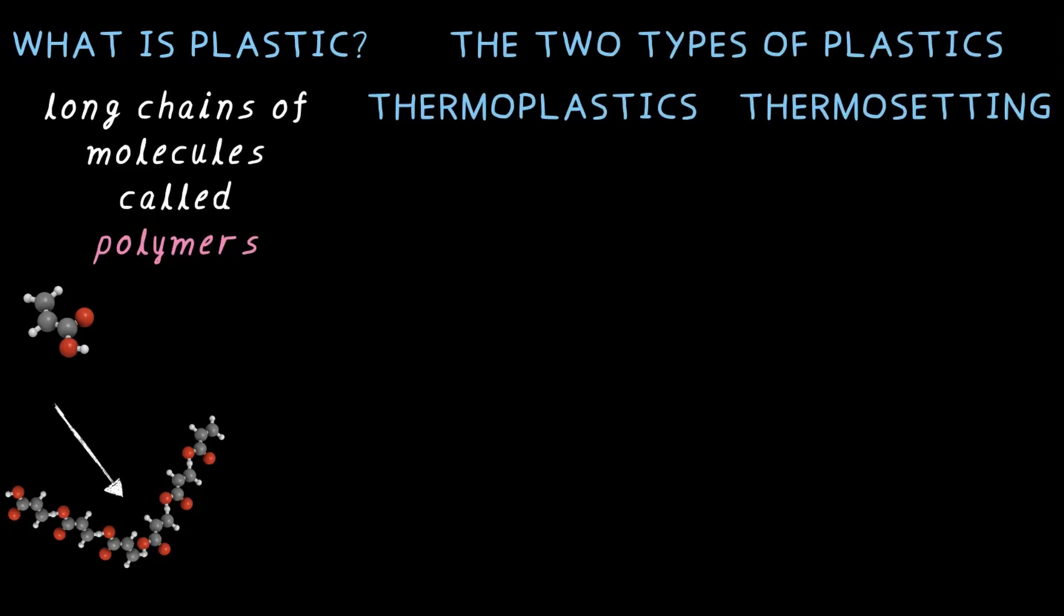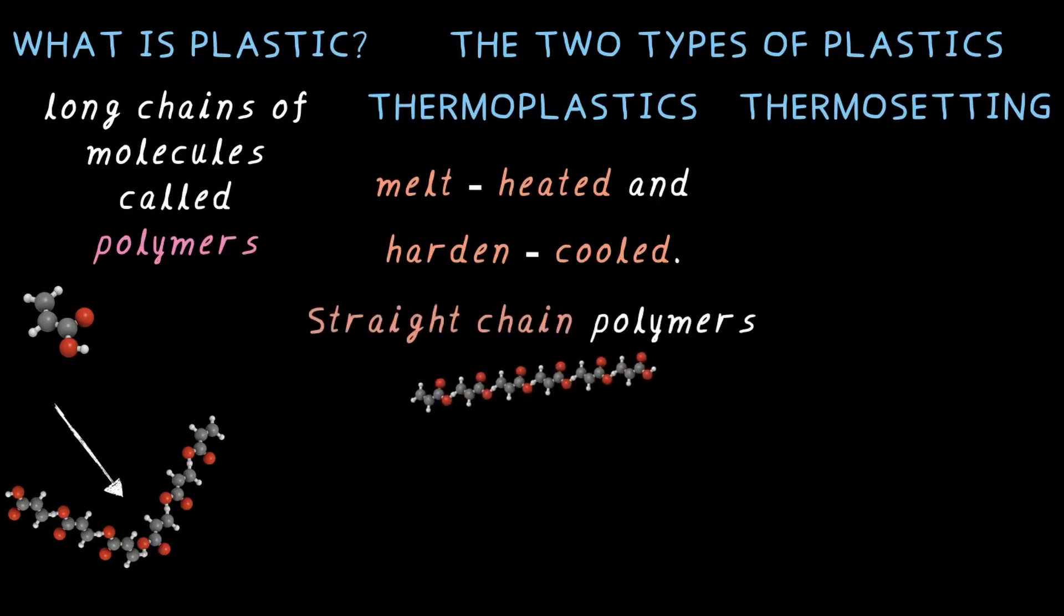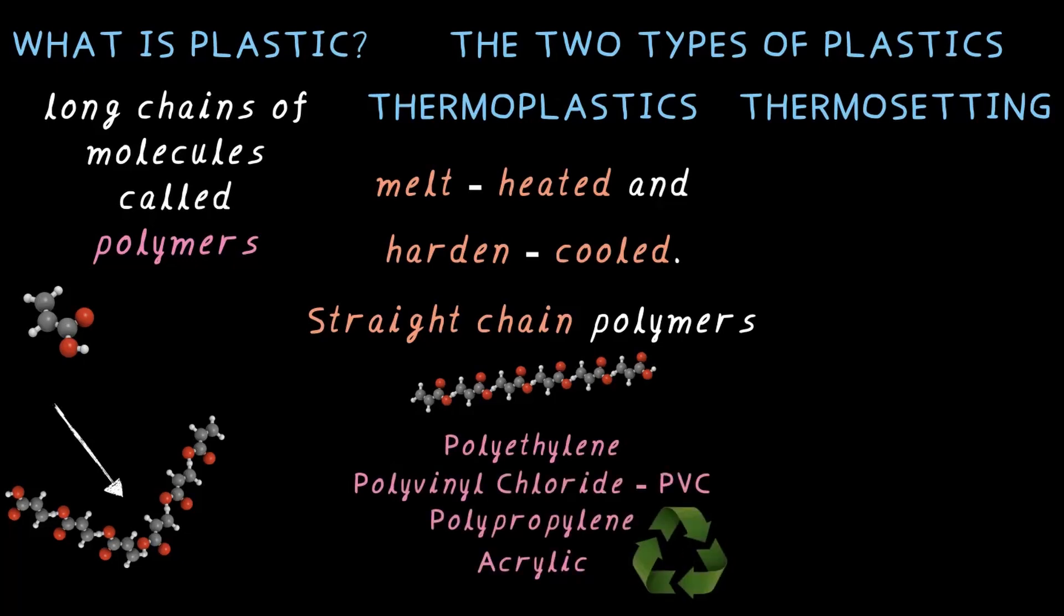What is thermoplastic? Thermoplastics melt when heated and harden when cooled. They are straight chain polymers like the ones you see here. Examples are polyethylene, polyvinyl chloride, polypropylene, and acrylic. Thermoplastics can be recycled. Very important property.